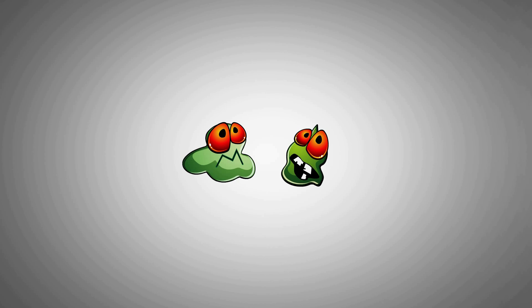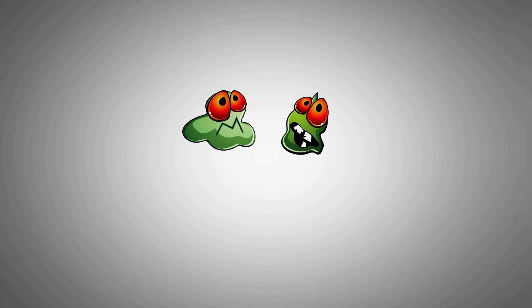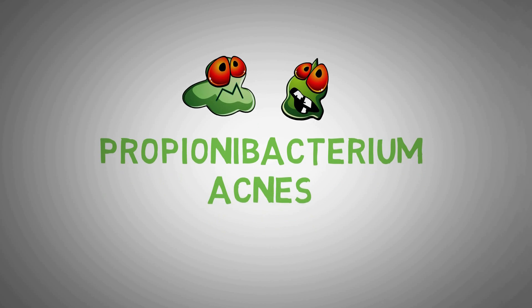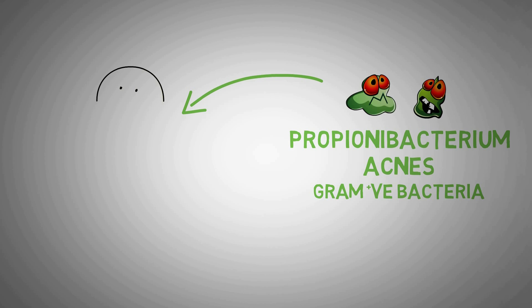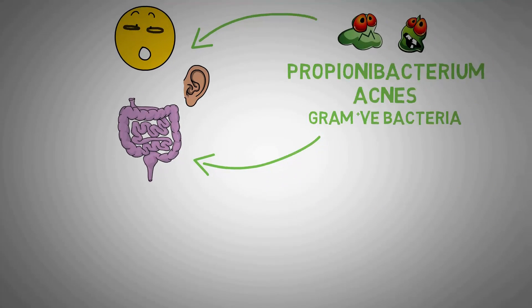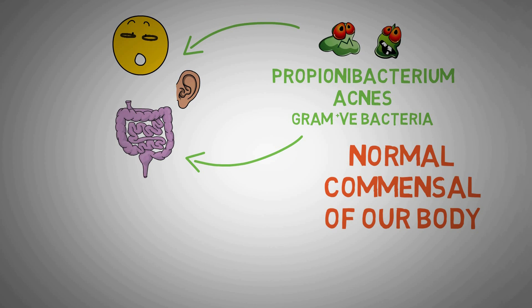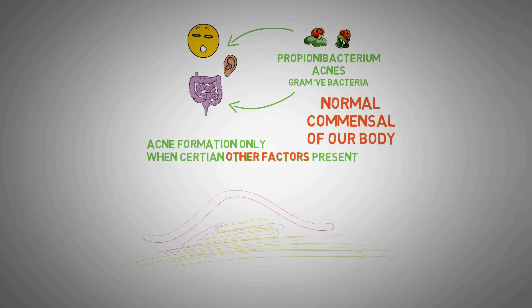The most common bacteria involved in acne is Propionibacterium acnes, which is a gram-positive bacteria present on human skin as part of normal flora, as well as in the oral cavity, large intestine, conjunctiva, and external ear canal — meaning this bacteria is a normal bacteria on our skin. Only in conditions where acne formation is favored does this bacteria colonize and cause inflammation.